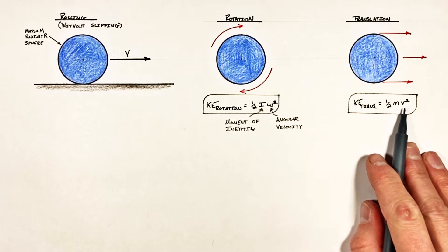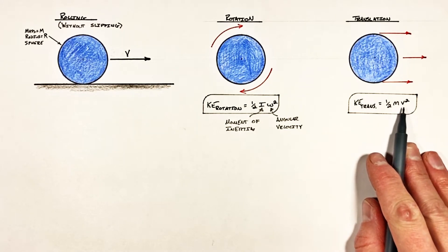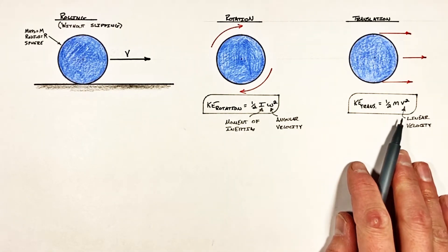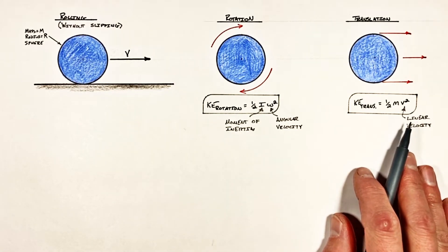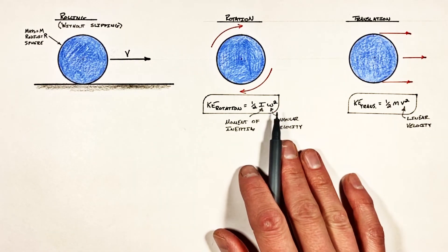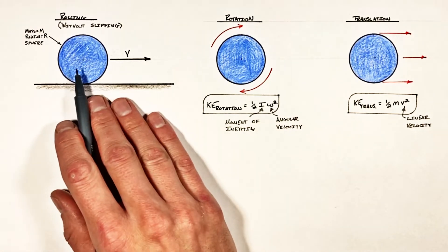Now if you're watching this video, you probably already know that the kinetic energy of a translating object is dependent on the linear velocity of the object. And the reason I bring that up is because this linear velocity is completely different from this angular velocity. These are two totally different quantities, and that's going to present an issue in a little while here.